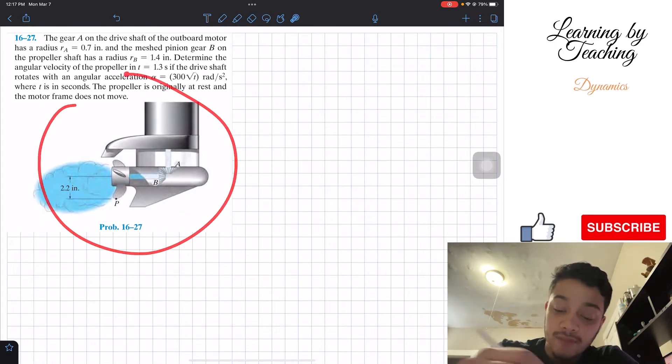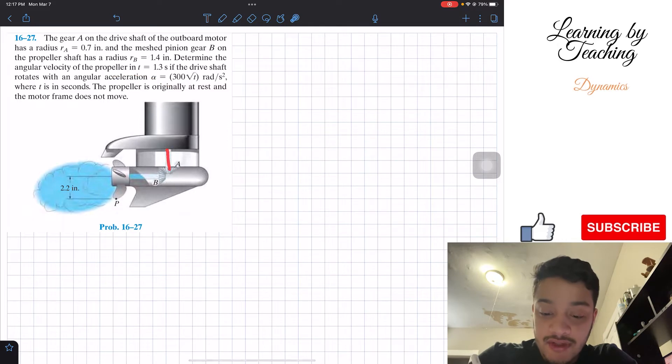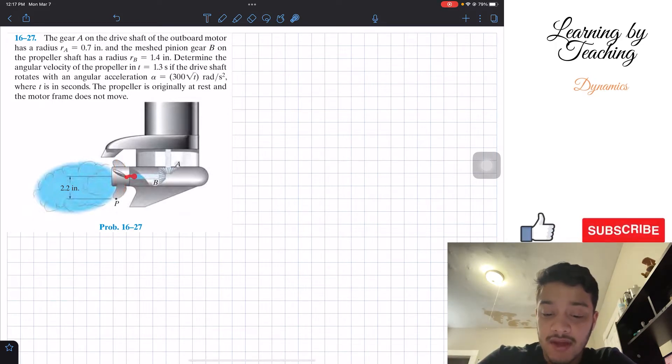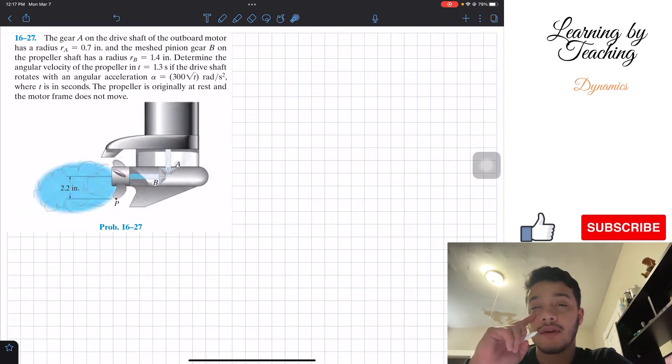So over here we're given our drive shaft and we have gear A and we're also given the mesh pinion at B, and we want to know the angular velocity of this propeller. Basically the mesh B and the propeller will have the same angular velocity.